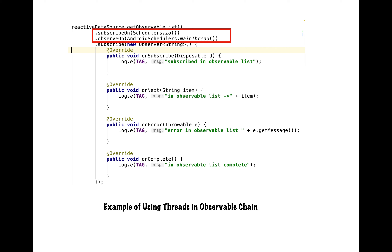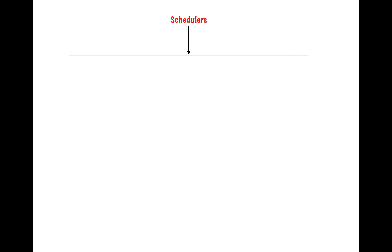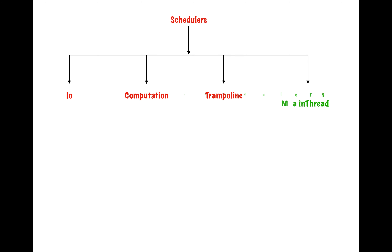Before jumping in, I want to say again that in this tutorial series I am going to cover all the basic needs for a developer to learn RxJava in Android development, so please subscribe to the channel. Now, in the Rx world there are four different kinds of schedulers available: IO, which we have already used in our last video; computation; trampoline; and AndroidSchedulers.mainThread.